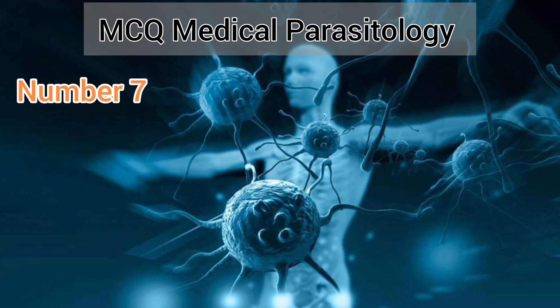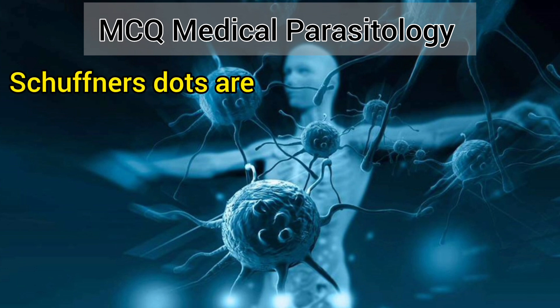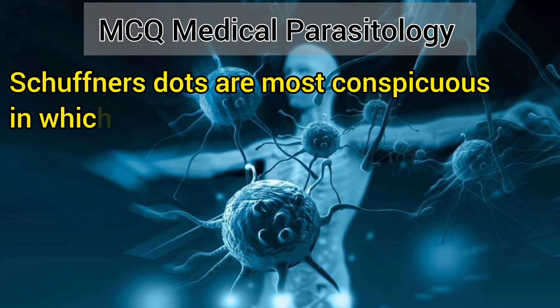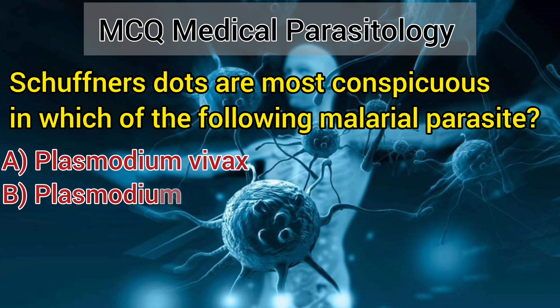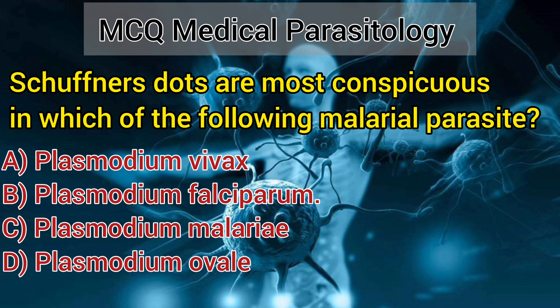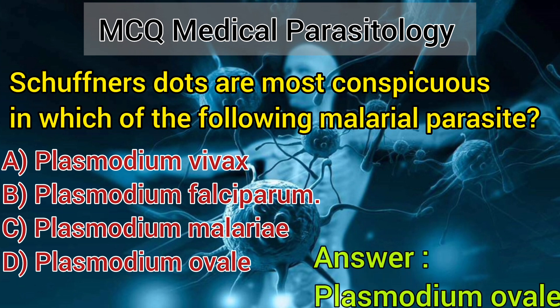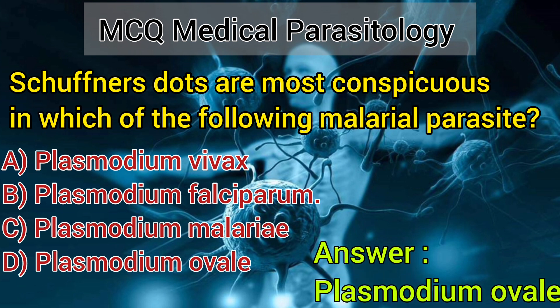Number 7. Schüffner's dots are most conspicuous in which of the following malarial parasites? A. Plasmodium vivax. B. Plasmodium falciparum. C. Plasmodium malariae. D. Plasmodium ovale. Answer: Plasmodium ovale.